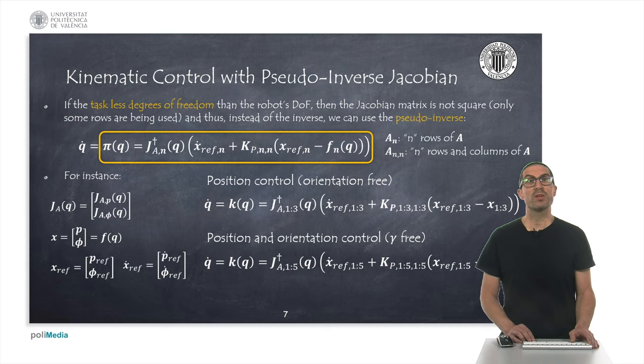The first task consists of positioning the end effector, but we don't care about its orientation. In this case, we will use the first three rows of the Jacobian matrix, as well as the first three rows of the vector x, xref, and xref dot. If, on the other hand, we want the tool to be perpendicular to a horizontal plane, but the orientation in the z-axis is not relevant, as would be the case for example of drilling operations, then we will use the first five rows of the corresponding matrices and vectors to perform the task, leaving the gamma orientation with respect to the z-axis free.